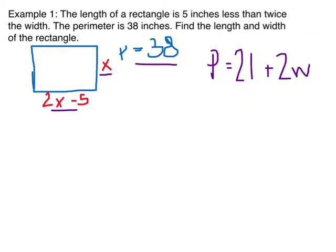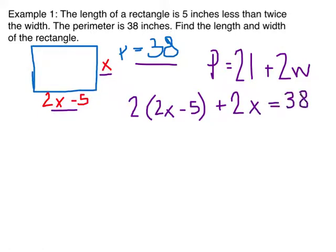Let's set up our equation. 2 length, so 2 times (2x minus 5) plus 2 width equals our perimeter, and we know our perimeter is 38. That is what step 3 wants you to do, just set up your equation.